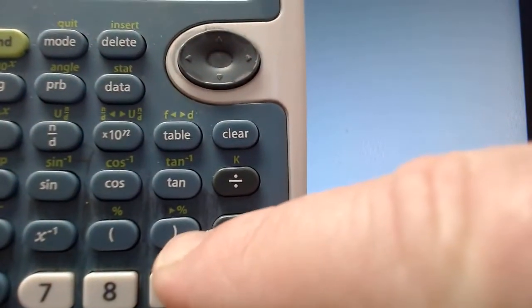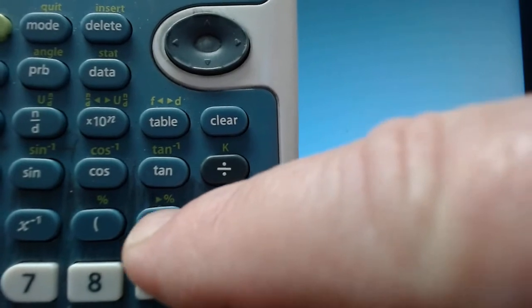Again, notice the button above the parentheses. It has the green marking, arrow, and percent sign.